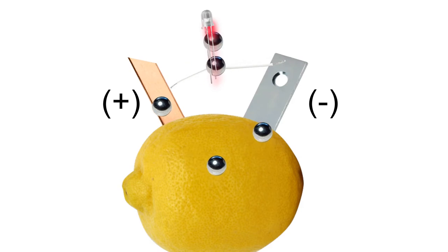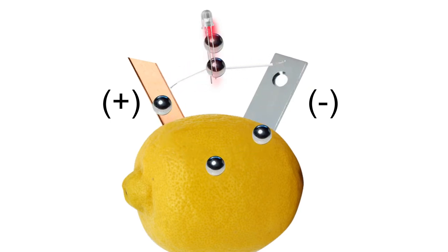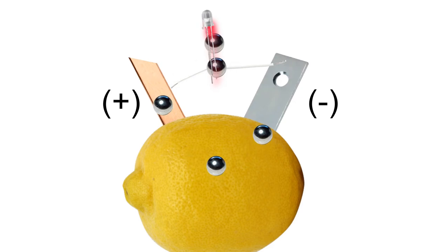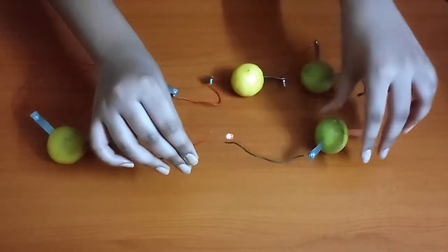Both the electrodes are not in contact with each other and thus the flow of electrons is generated through the electrodes and the electrolyte from the negative to the positive electrode. This flow of electrons results in the generation of electricity which lights up the LED.